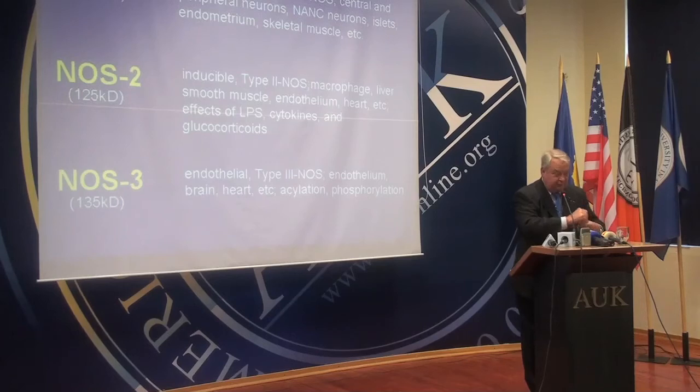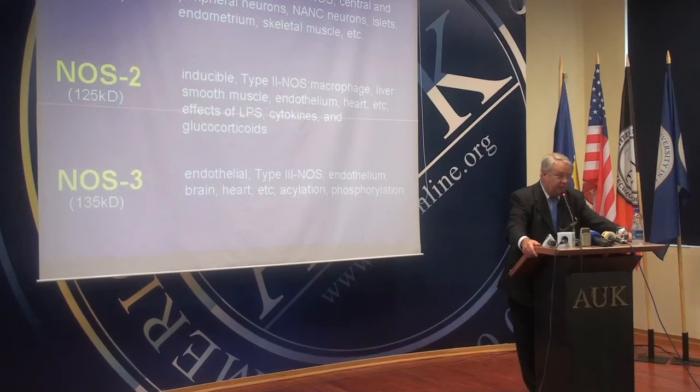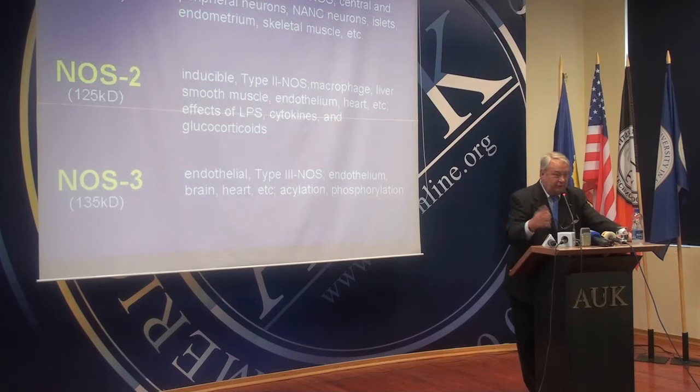NOS, inducible NOS, and endothelial NOS, or NOS-3. There are three genes that reside in three different chromosomes to make these enzymes. There's a lot of homology between them, about 50 or 60 percent. They're very complicated enzymes and very ubiquitous. Not only is the brain type found in the brain, but it's found in the uterus — it's found all over the place. And the same is true with the inducible isoform.